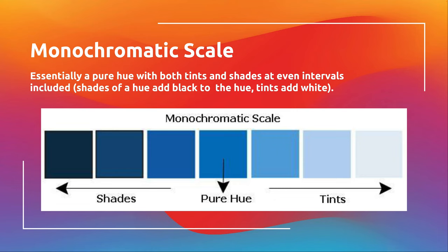Monochromatic scales. Monochromatic relationships are basically the pure hue with either white or black. White leads you to tints of the pure hue, and adding black gives you shades. In a monochromatic scale, you're effectively changing the hue by adding black or white for tints and shades.